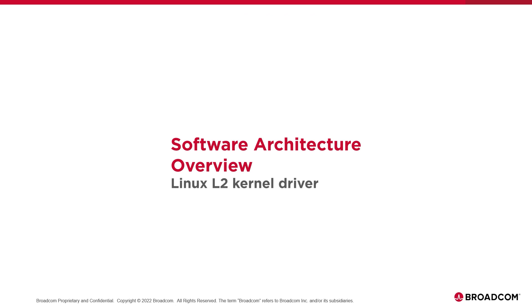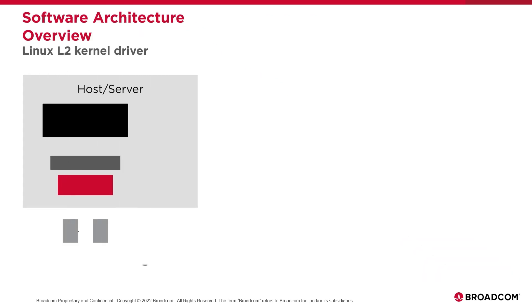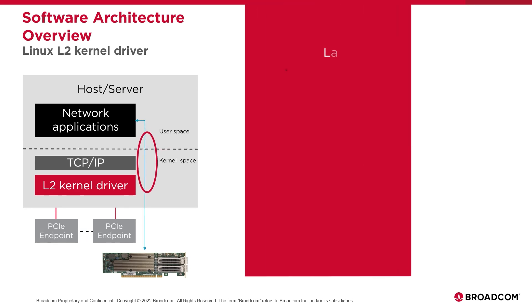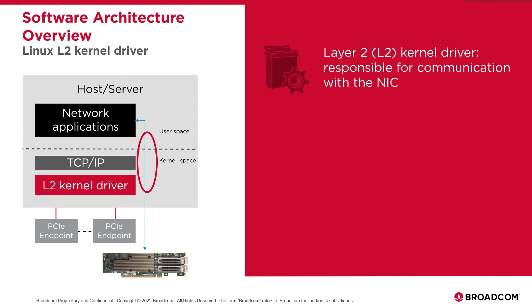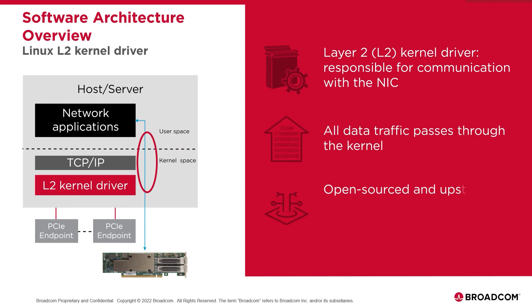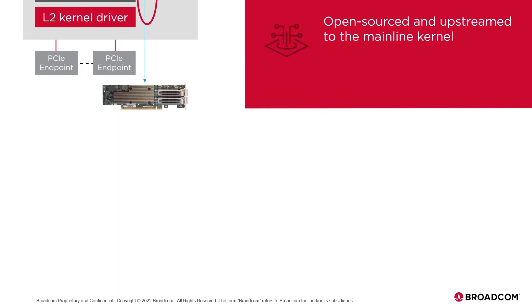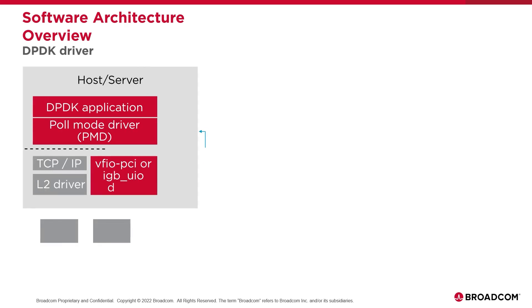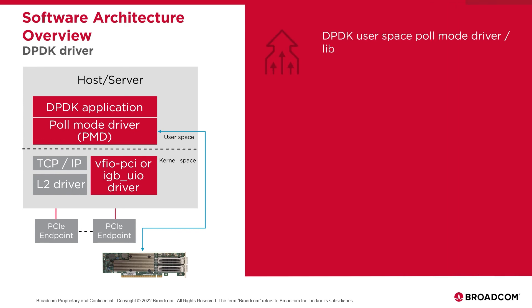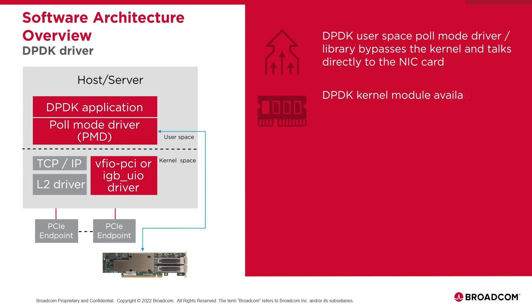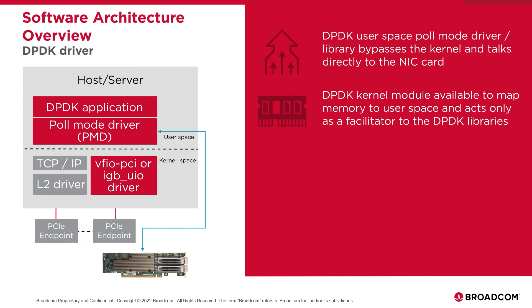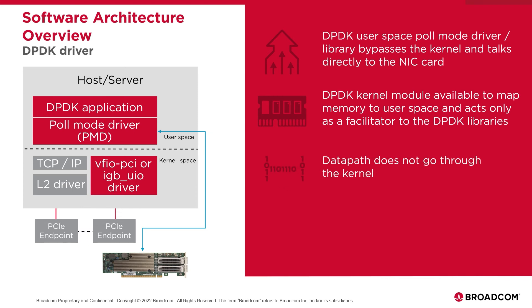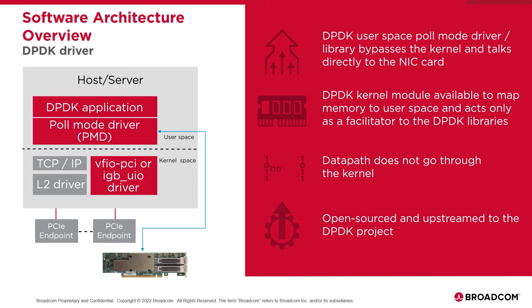We'll briefly cover the NIC's Linux kernel driver. This driver is responsible for communication with the NIC and the kernel. Broadcom's L2 driver is open-sourced and upstreamed to the mainline kernel. In a standard Linux configuration, all data passes through the kernel and its network software stack. Another type of driver, called a DPDK driver, is supported on Broadcom THOR NICs as well. The DPDK driver improves performance by bypassing the kernel — the DPDK kernel module simply facilitates access to memory and needed libraries. This is useful for special high-performing applications that are able to take advantage of the improved performance. Broadcom's DPDK driver is also open-sourced and available upstream via the DPDK project.